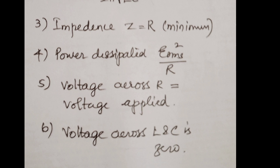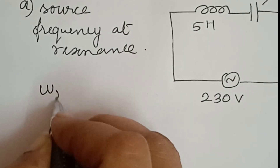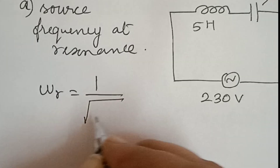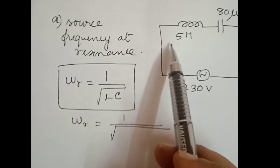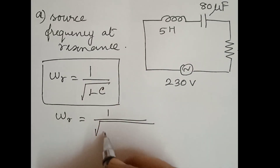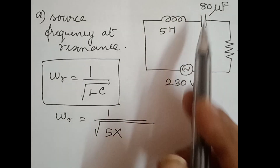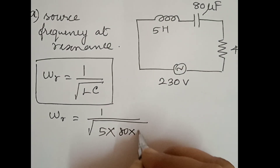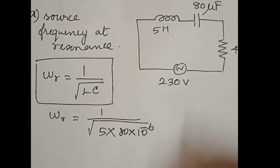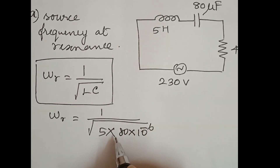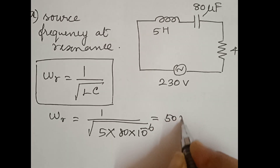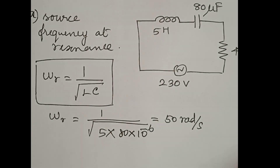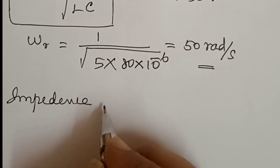The resonant angular frequency Omega is equal to 1 by root LC. So, resonant angular frequency Omega equals 1 by root of LC, where L is 5 and C is 80 into 10 to the power minus 6. So, 5 into 80 equals 400, and the square root of 400 is 20. Therefore Omega equals 1000 by 20, which equals 50 radians per second. The angular frequency unit is radians per second.